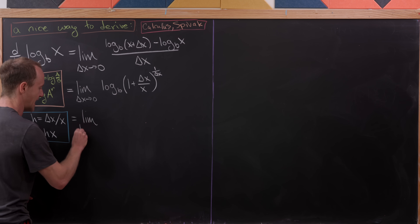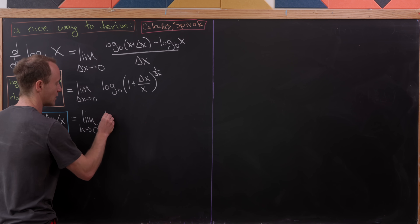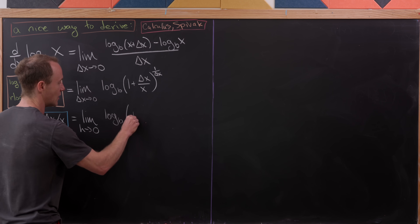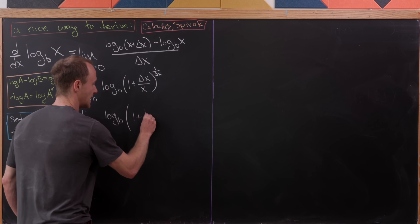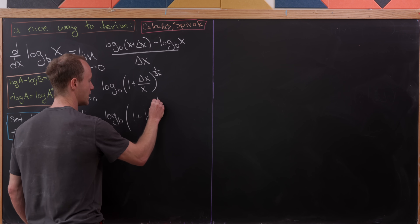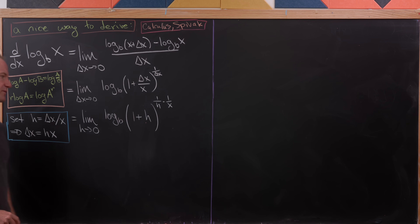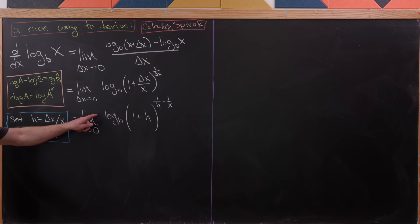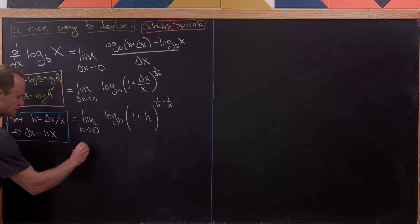We now have the limit as h → 0, because as Δx approaches 0, h also approaches 0. The expression becomes log base b of (1 + h) raised to the power 1/(h·x). We can use a logarithm rule to bring the 1/x out front, and since x is a constant with respect to h, it can be taken entirely outside the limit.